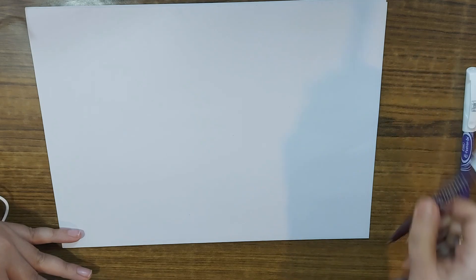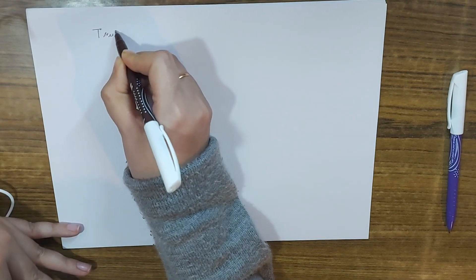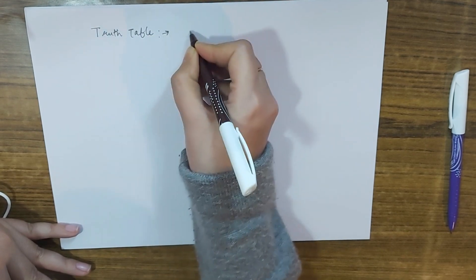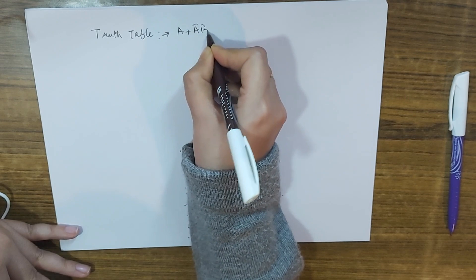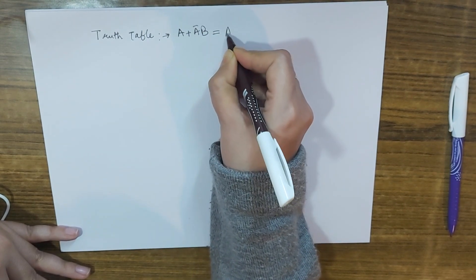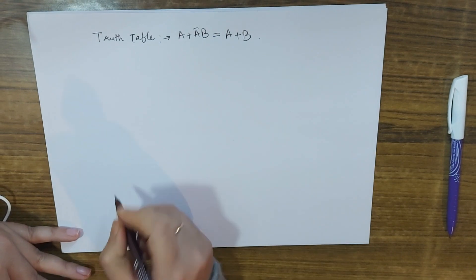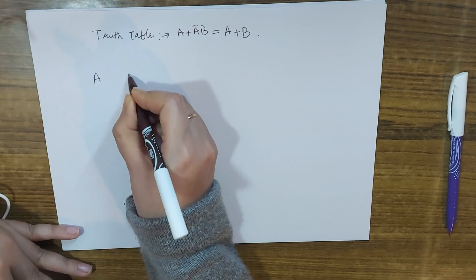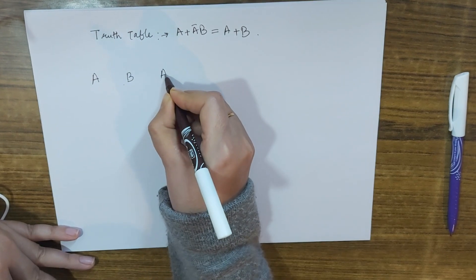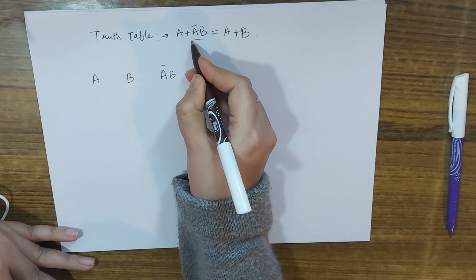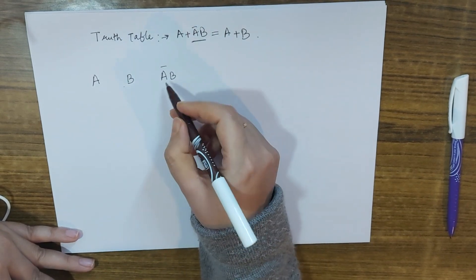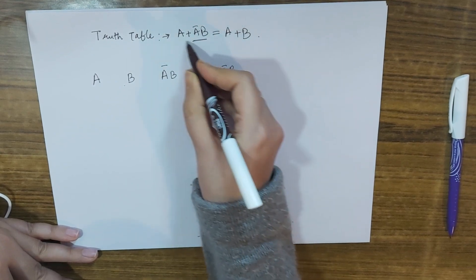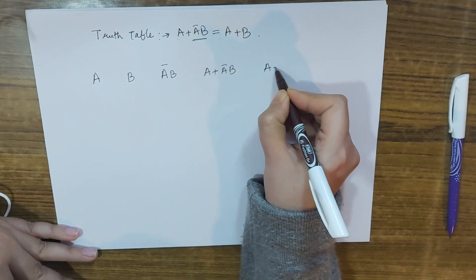To prove A plus A-complement B equals A plus B using a truth table, we set up columns: A, B, A-complement B, then A plus A-complement B, and finally A plus B. The last two columns should be equal.